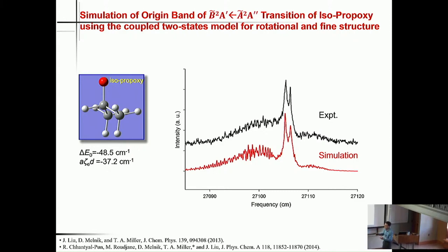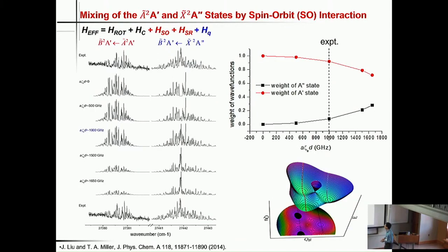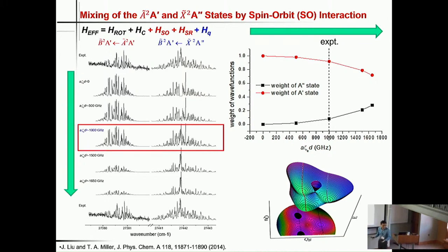A better example is cyclopentoxy radical. For reasons I don't have time to explain here, they were able to obtain both X to B and A to B transitions with good resolution. Because of the larger molecule, the signal-to-noise ratio is not that good, but we were able to simulate both bands. When you use the rotational model, you can tune the spin-orbit interaction constant from zero to the A-X separation and see how the two states are mixed. One simulation reproduced the experimental results best, and at that value the A prime and A double prime wave functions are mixed by about 10%, causing a significant difference in simulation.